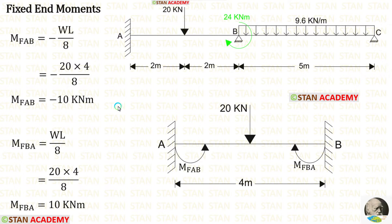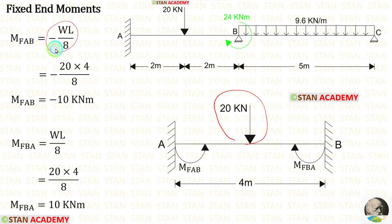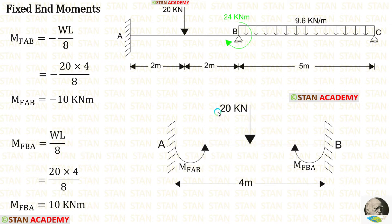Now let us find the fixed end moments. First, let us find them in span AB. In span AB there is a point load of 20 kN acting at the center. The formulas to find the fixed end moments are −WL/8 and +WL/8. Here W is 20 and L is 4. Applying the values, we get M_AB and M_BA.